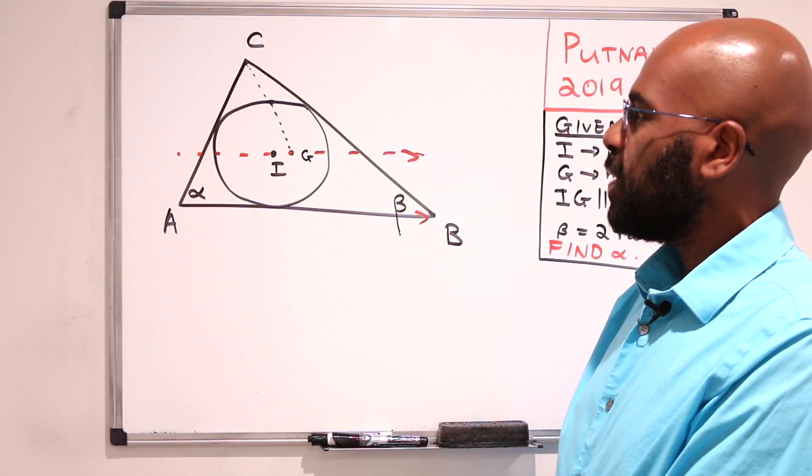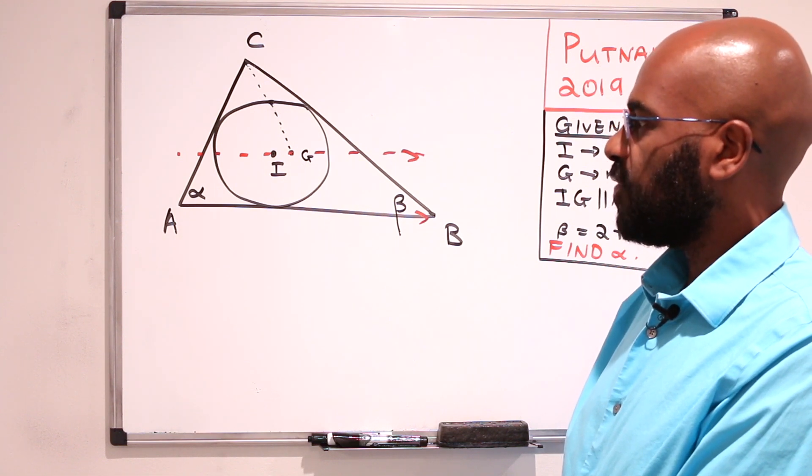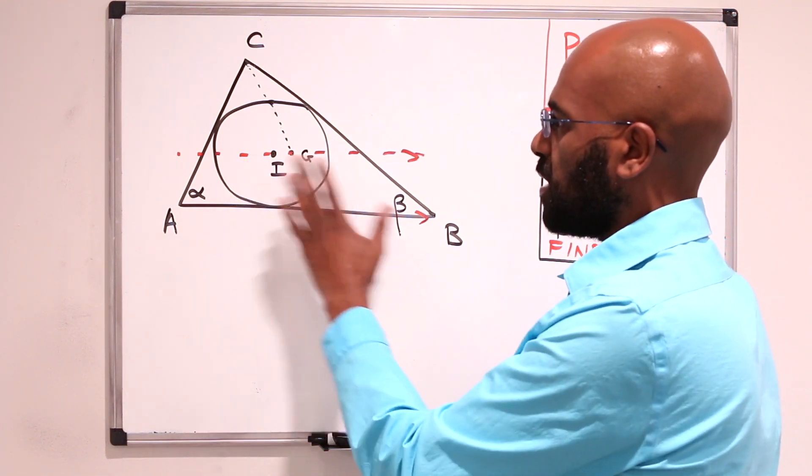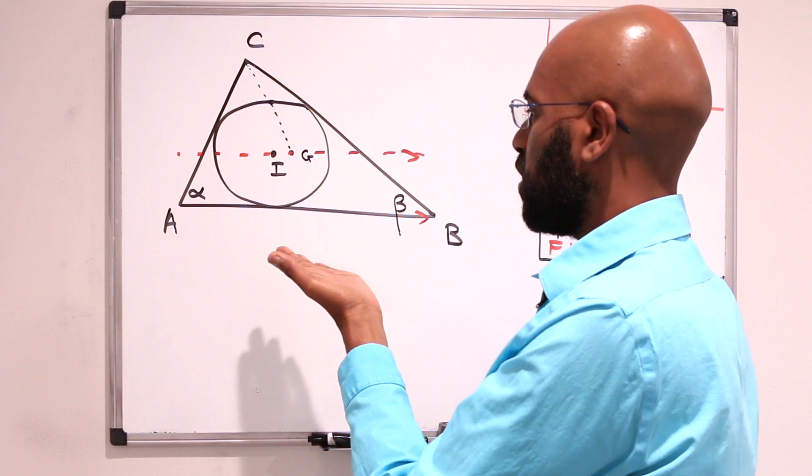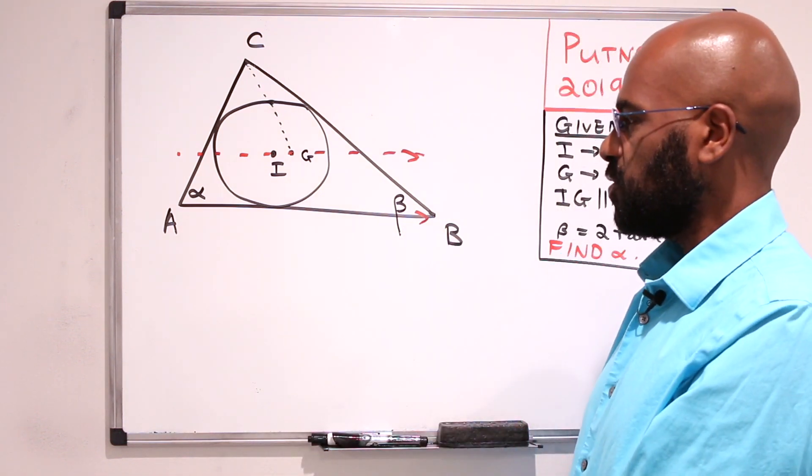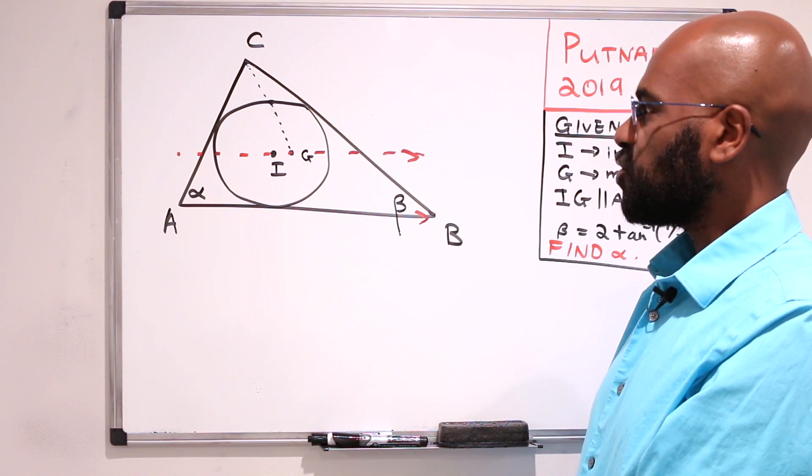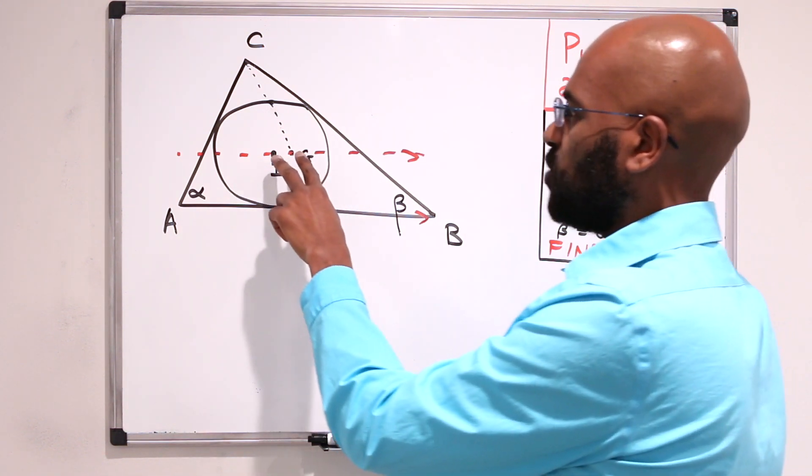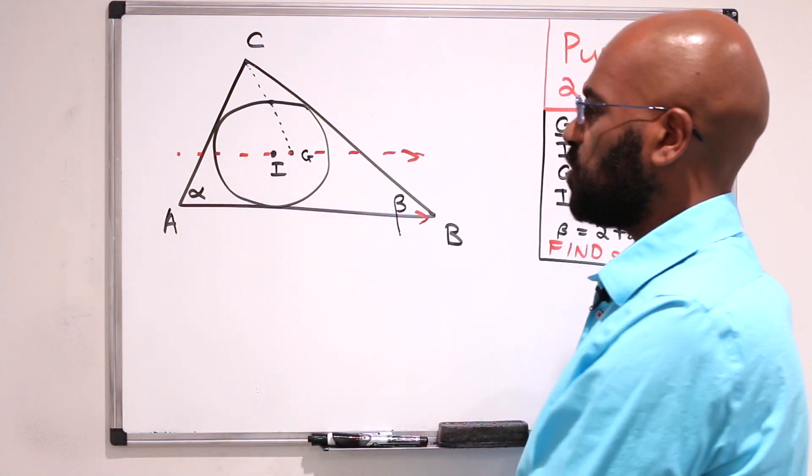So one way to go about trying to determine alpha is maybe splitting this up into pieces and using trigonometry, since you know beta in terms of trigonometric values as well, but let's actually use the fact that we know that IG is parallel to the base to do something with this.